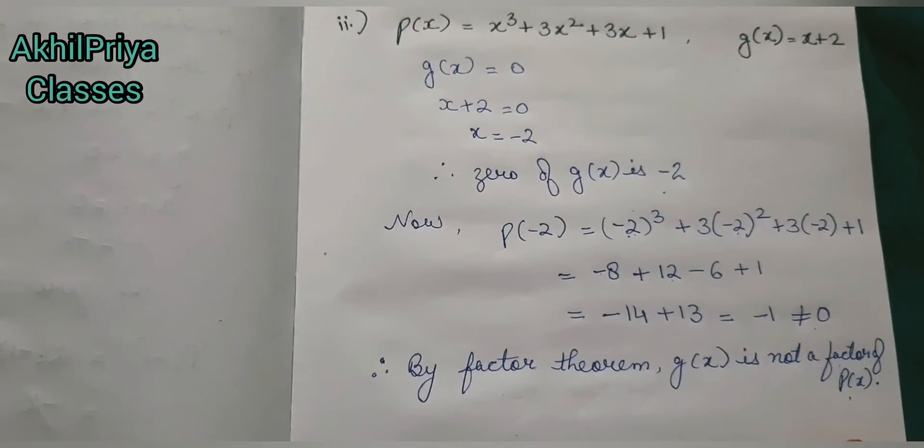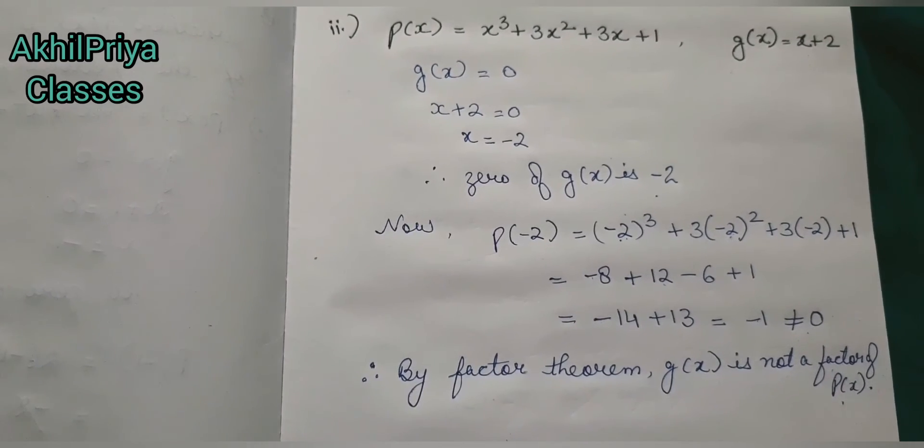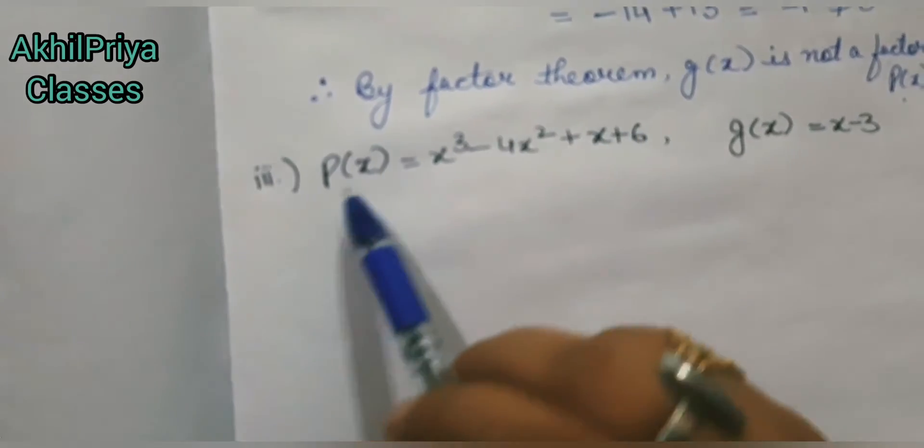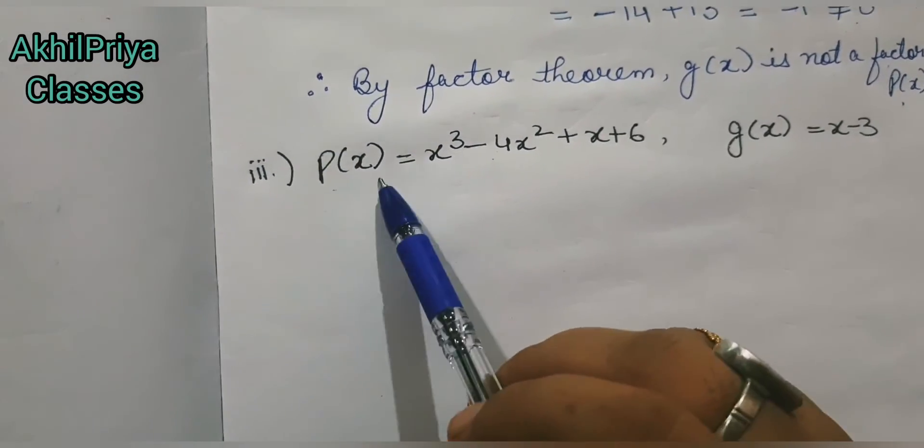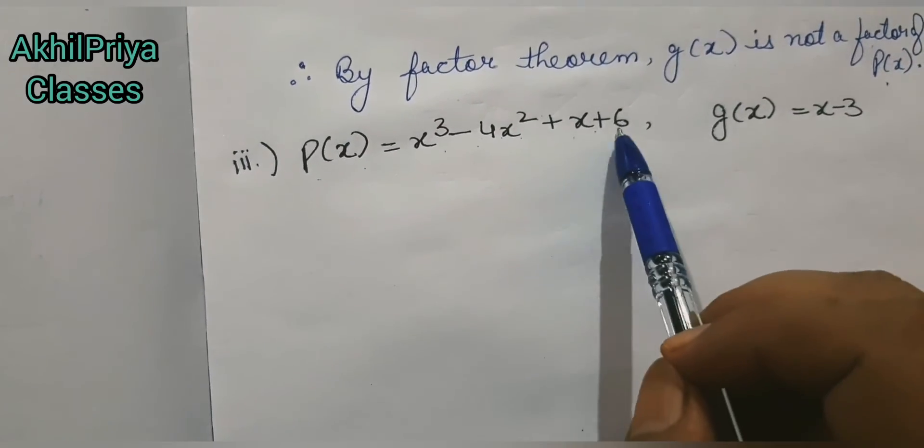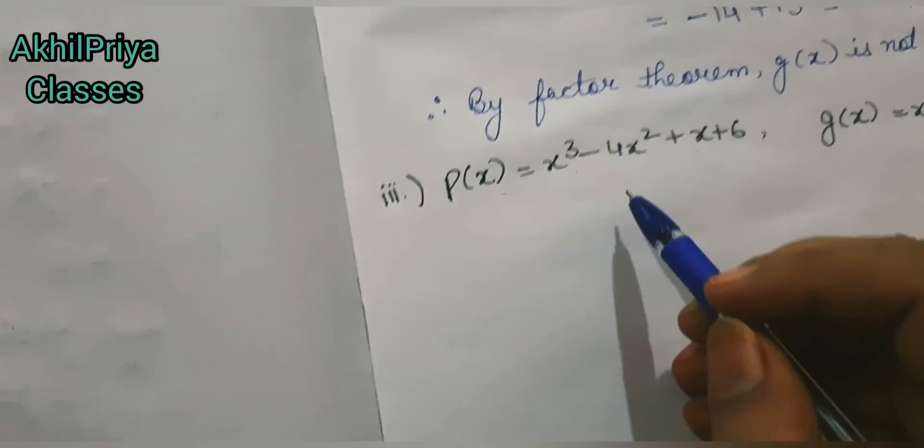So that was our second part solution. Now we will do our third part. Now we are going to solve our third part in which the polynomial given is p(x) = x³ - 4x² + x + 6.